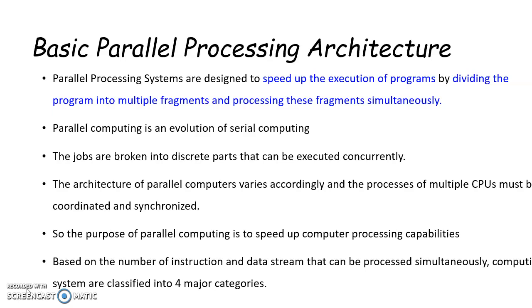For example, while an instruction is executed in the ALU, the next instruction can be read from memory. Parallel processor systems are designed to speed up the execution of programs by dividing the program into multiple fragments and processing these fragments simultaneously. The programs or jobs are broken into discrete parts that can be executed concurrently.